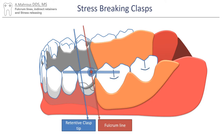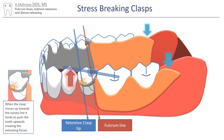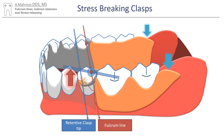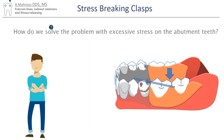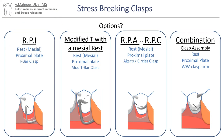The red line represents the fulcrum line, and the blue line represents a line connecting the tips of the cast circumferential clasps. Notice that when apical forces are placed on the distal area of the edentulous segment, the clasps existing anterior to the fulcrum line move in an occlusal direction. This is what creates the potentially damaging forces on the abutment teeth. So how do we address this issue?